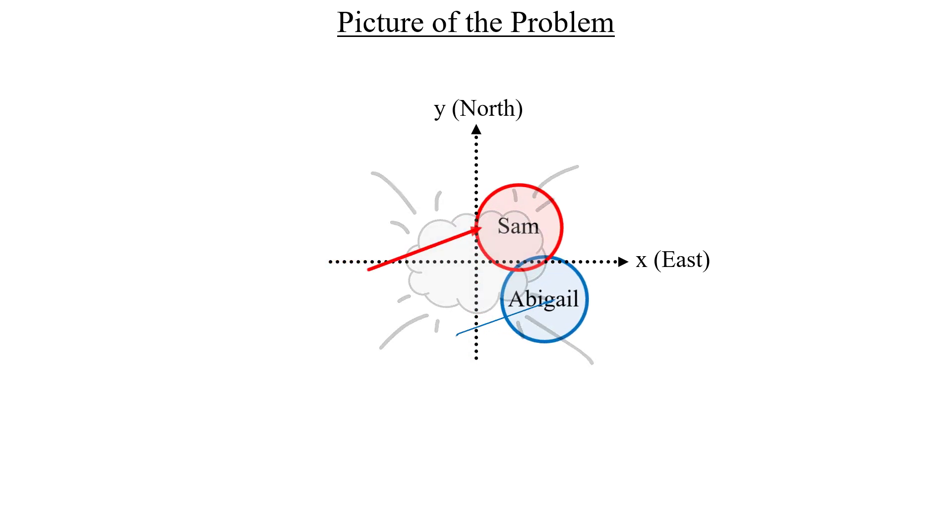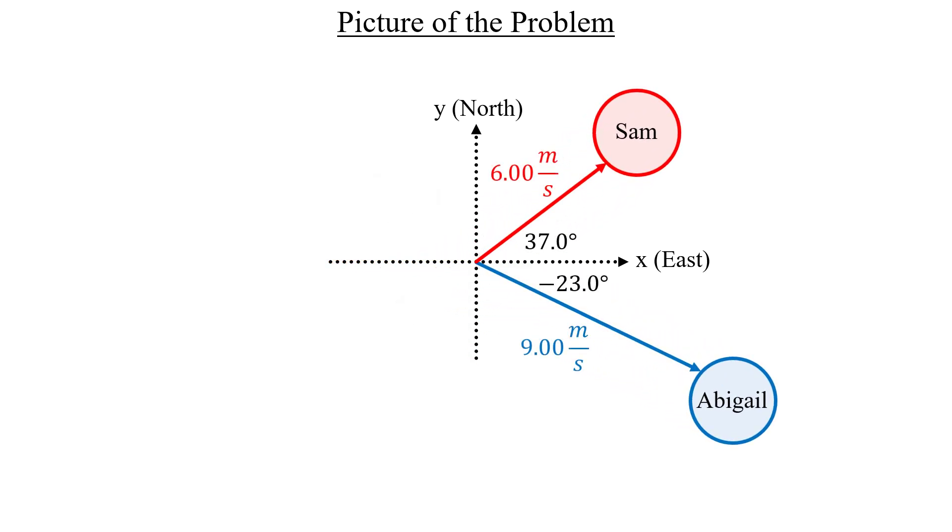Sam will be moving at a rate of 6 meters per second at an angle 37 degrees north of east. And Abigail will be moving at a rate of 9 meters per second at an angle of 23 degrees south of the same direction.